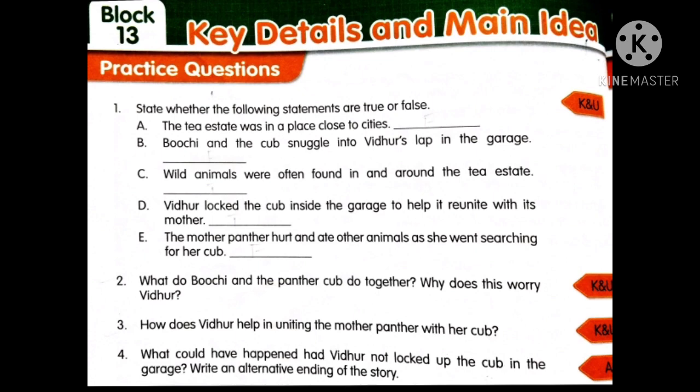The third question: how does Vidur help in uniting the mother panther with her cub? We observed that the mother panther was searching for her cub. Vidur helped the panther to meet its cub. Write the process — what he did — taking only the main sentences, within four to five lines.